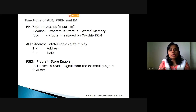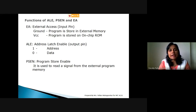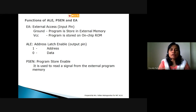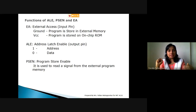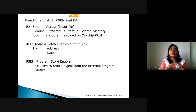At the end of yesterday's lecture, we covered port 3 functions - what we call the alternate or special function given to port 3. We saw that read and write pins are in port 3. The memory control lines are read and write connections. So on the memory side the read and write signal connects to the microcontroller's port 3 read and write signal. That is the connection between the two.